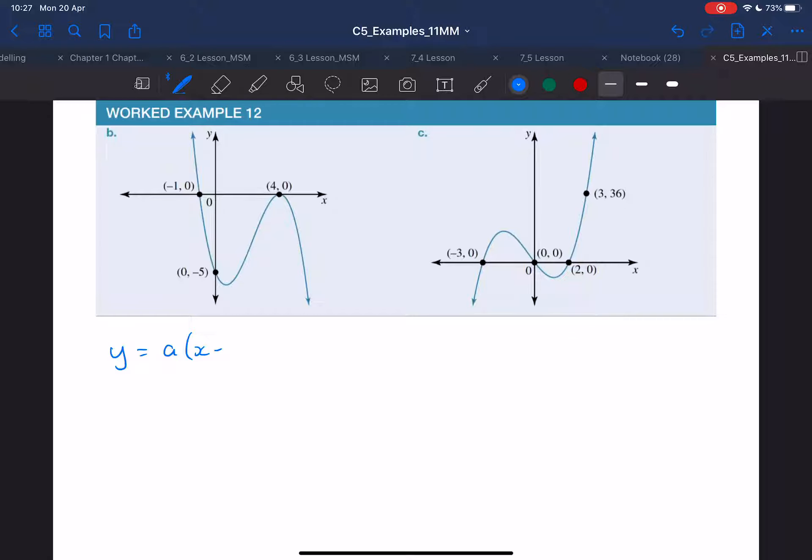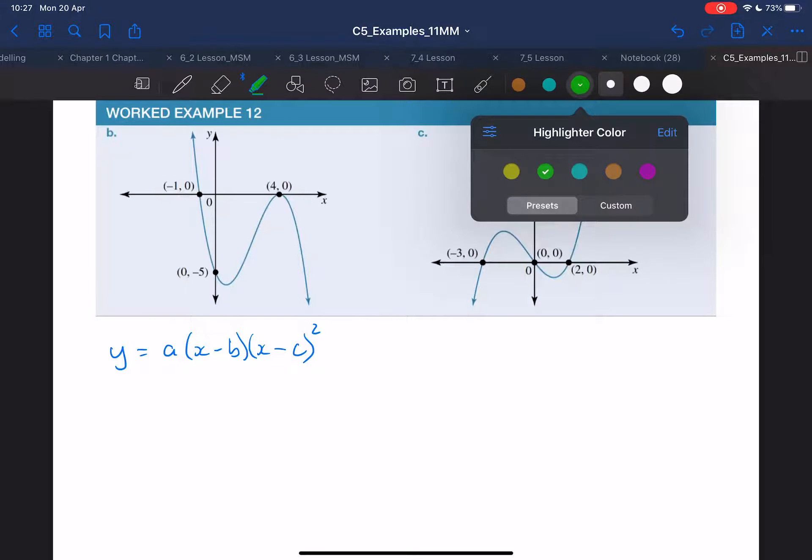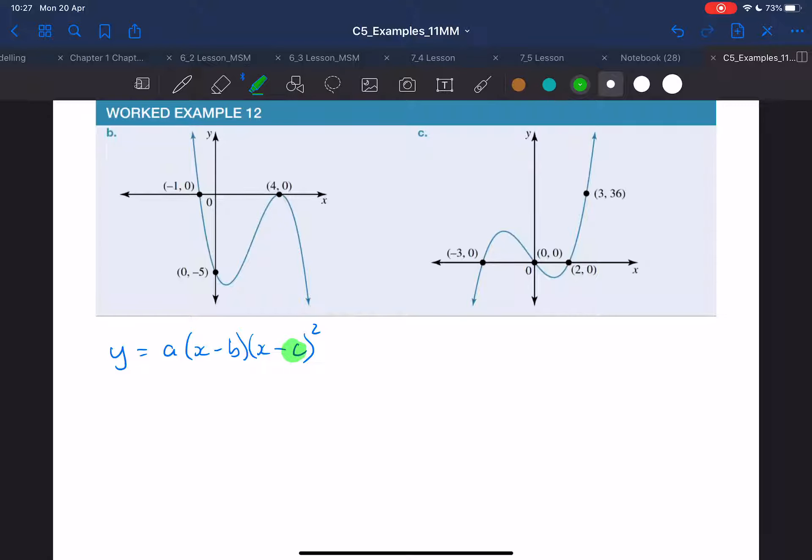Now, x, let's call it x minus b, x minus c. And minus c is squared because this c value here will be for this point, because the square means it is turning on the point.